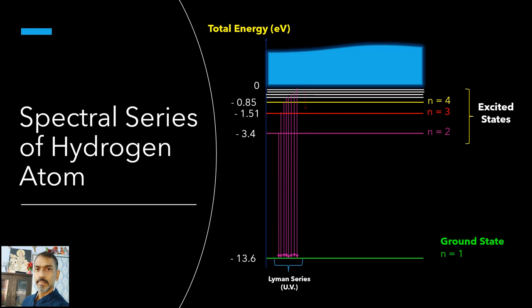The spectral series corresponding to the transitions n equal to 3, 4, 5 and higher to n equal to 2 lies in the visible region and is called Balmer series.